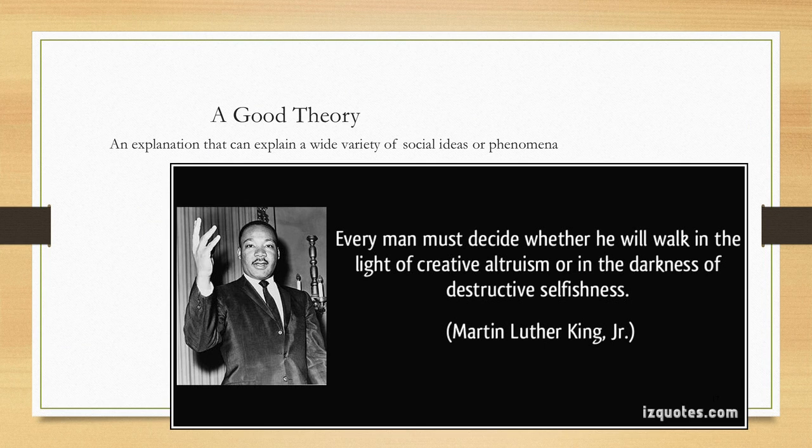A good theory, a theory that a community of researchers tends to use, is one that can explain a wide variety of social ideas or phenomena. Take for example altruism. We want to come up with a theory about altruism that can explain it not just in regards to the civil rights movement, but anywhere in the world. A good theory should be able to explain what is going on in one place but also in another place. It has wide variety of application.